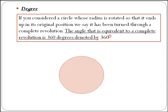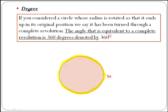Let's consider a circle. We know if we start here, a complete revolution will be 360 degrees. In the same way, half of a revolution, which will be this angle here, will correspond to 180 degrees.